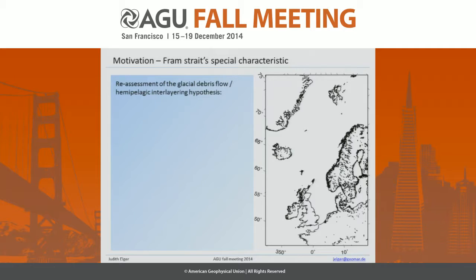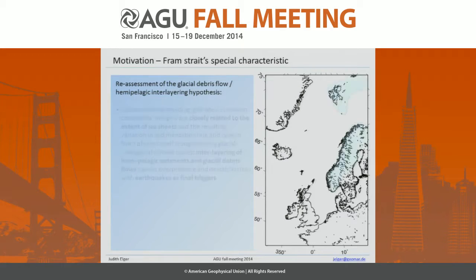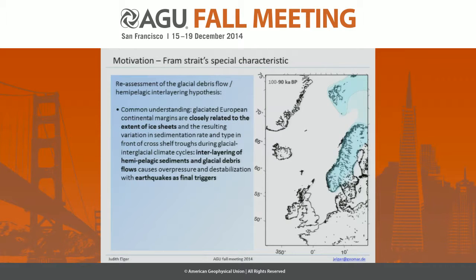So why should we focus on the Fram slide? Well, it might potentially force us to reassess the hypothesis used to explain most of the large landslides on the glaciated European margin in the North Atlantic. I call this the glacial debris flow hemipelagic interlayering hypothesis. The common understanding is that instability on the glaciated European margin is closely related to the extent of ice sheets during the different ice ages.